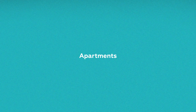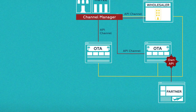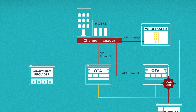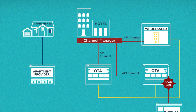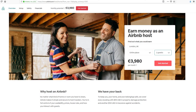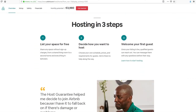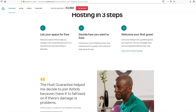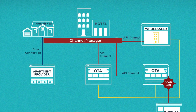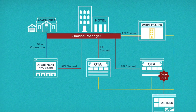But what about apartments? How are they distributed? Platforms such as Airbnb that market rooms from individual owners and small businesses offer a unique inventory. In most cases, homeowners directly manage their rooms using the Airbnb interface, which doesn't require any third-party API. However, if a homeowner or hotel uses a channel manager, it can be connected to the apartment provider via an API the way OTAs do it.